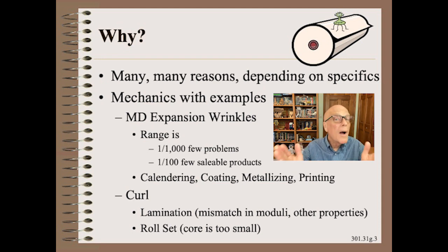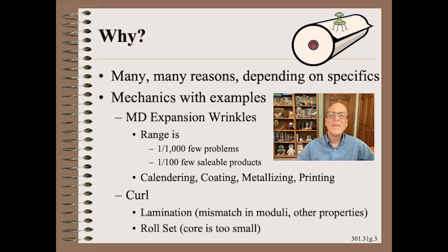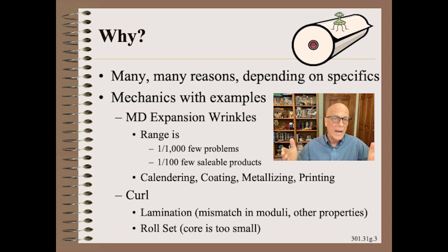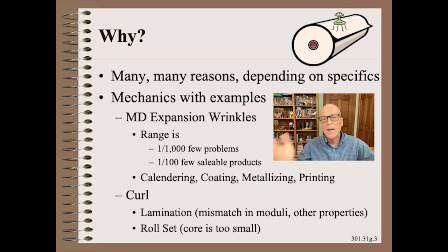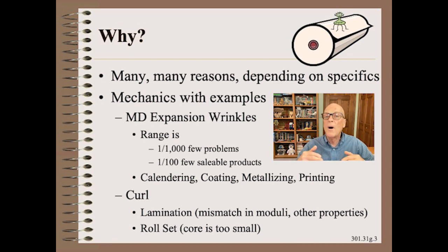If you ask why processes are causing problems, there are many reasons depending on the specifics. Here, we will just illustrate the topic with examples of ND expansion wrinkles due to width expansions in the range of one part in 1000 to one part in 100, that is possible with a wide variety of value-added processes such as calendaring, coating, metalizing, printing, and so on. Other examples we give are one or two of the half-dozen causes of curl.